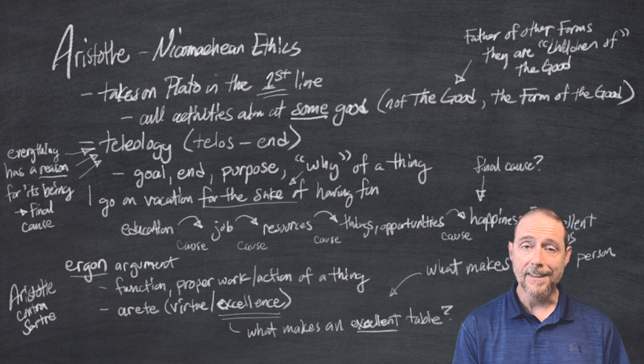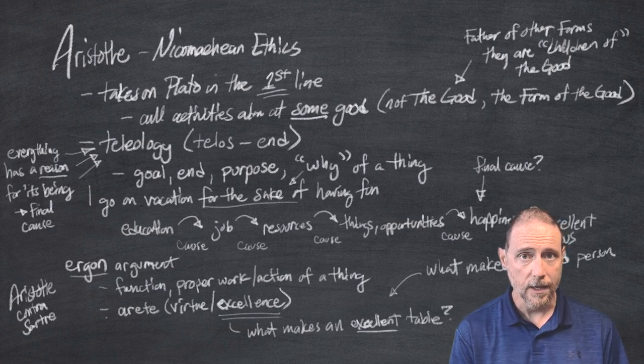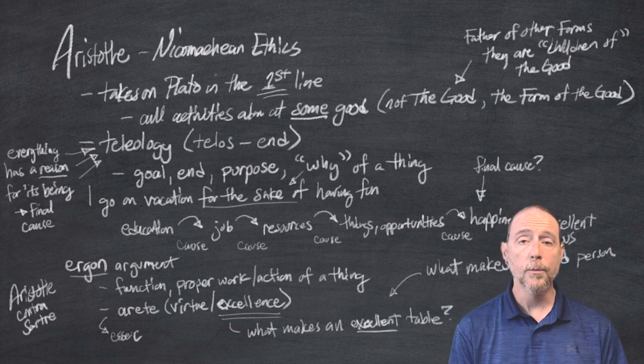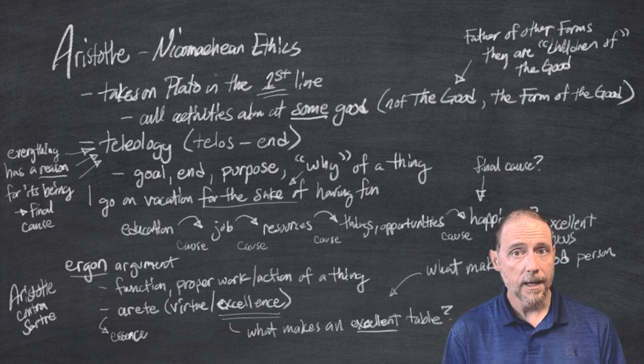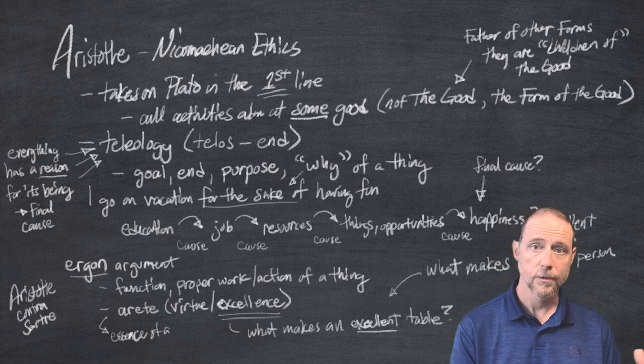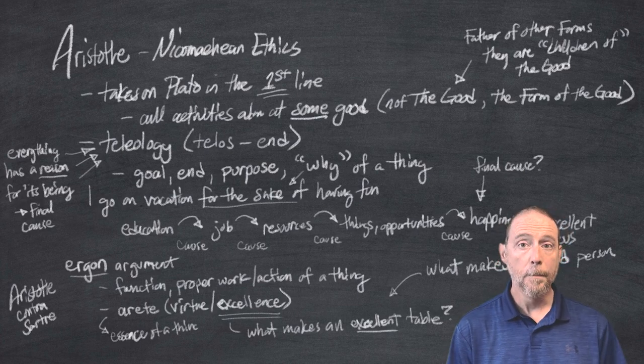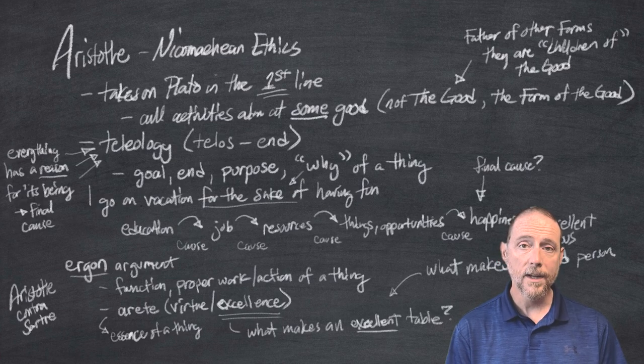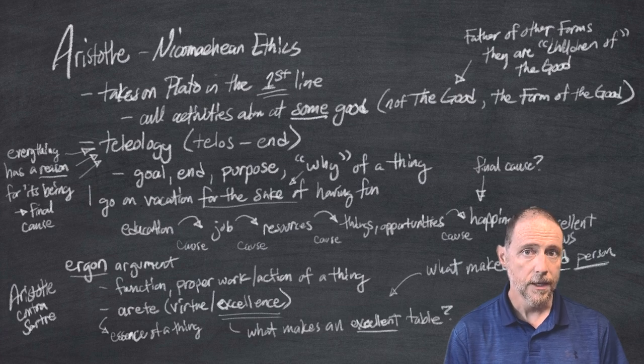For Aristotle, everything has a purpose that was given to it as a function of it being created and being the kind of thing that it is. In other words, the essence of that thing, implicit in the essence of that thing, is its final cause. The why of its existence is implicit in what it means to be that thing. For tables and knives and chairs and all that, it's perfectly obvious. But for people, it is not so obvious. What is the excellence that defines whether or not someone is good, is virtuous?